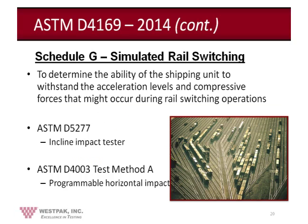Schedule G is a test input called simulated rail switching. It is used to determine the ability of the shipping unit to withstand acceleration levels and compressive forces that might occur during rail switching operations. Rail switching is not about switching of the tracks — it has to do with the coupling of different cars within the rail switching yard, where 'switching' means changing cars from one train to another.